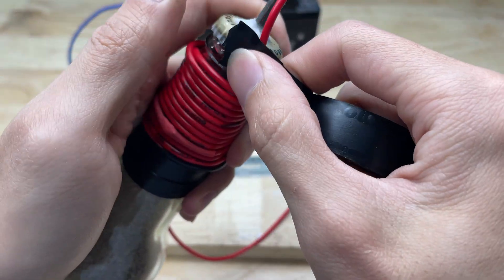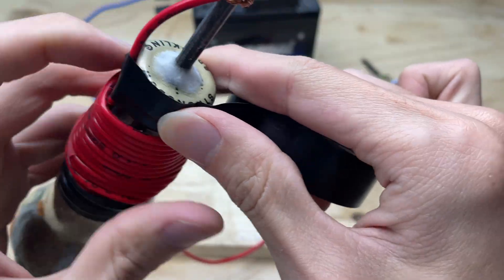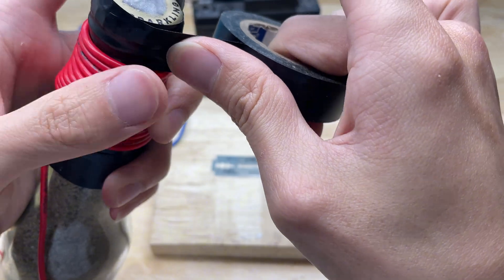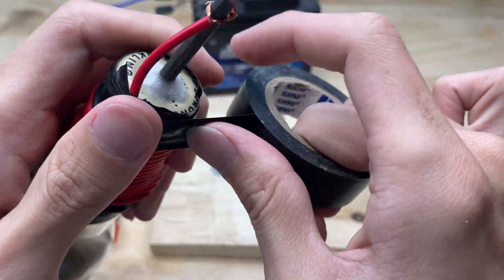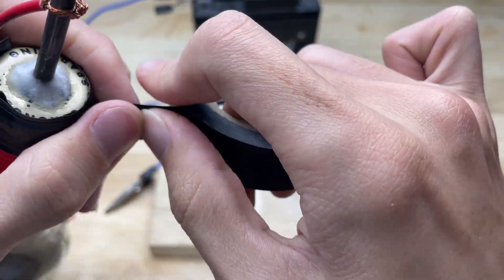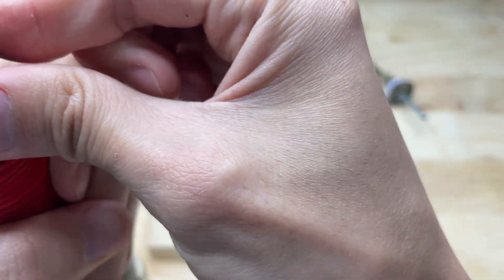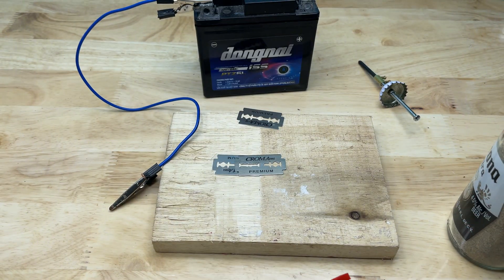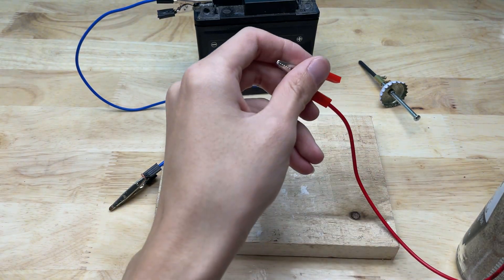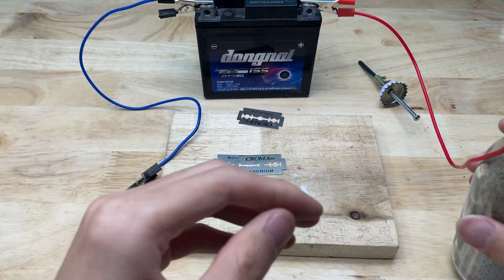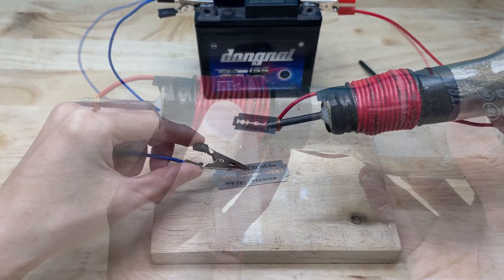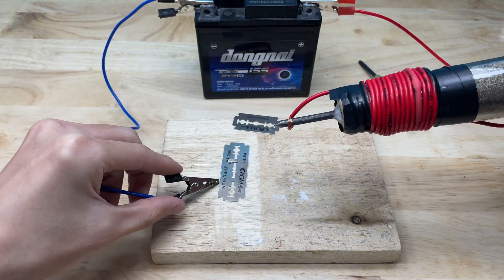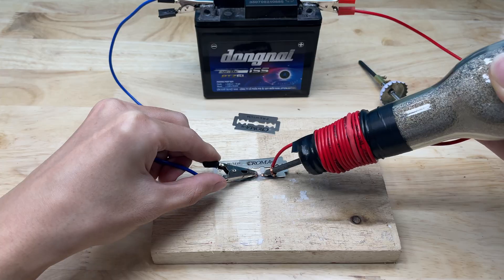After that, I will wrap tape tightly around the bottle cap to seal any gaps. This layer of tape helps keep the sand inside from leaking out when the bottle is tilted or turned upside down, while also adding extra strength and stability to the cap. Thanks to the nail tip being neatly sharpened and having a small cross-sectional area, heat is concentrated more effectively, allowing the welding tip to respond quickly and be easier to control.